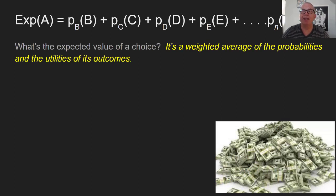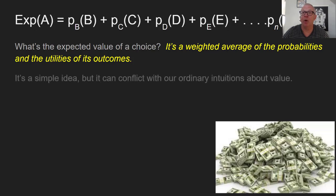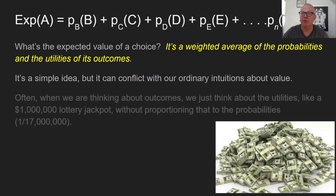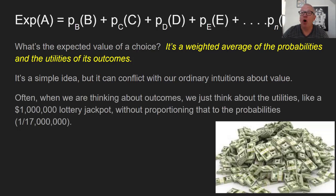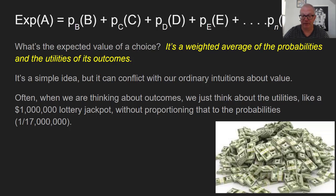The expected value of a choice is the weighted average of the probabilities and utilities of its outcomes — that's the way to understand it in English. It's a simple idea, but it can conflict with our ordinary intuitions about value. Often when thinking about outcomes, we get distracted by the jackpot — like a million-dollar lottery jackpot — without properly weighting by the probabilities.